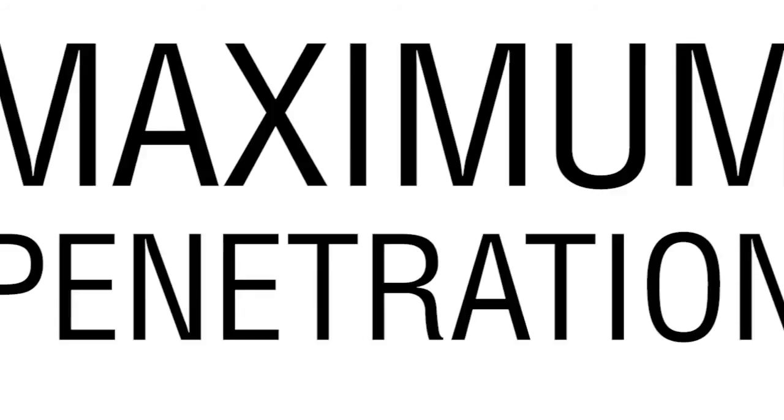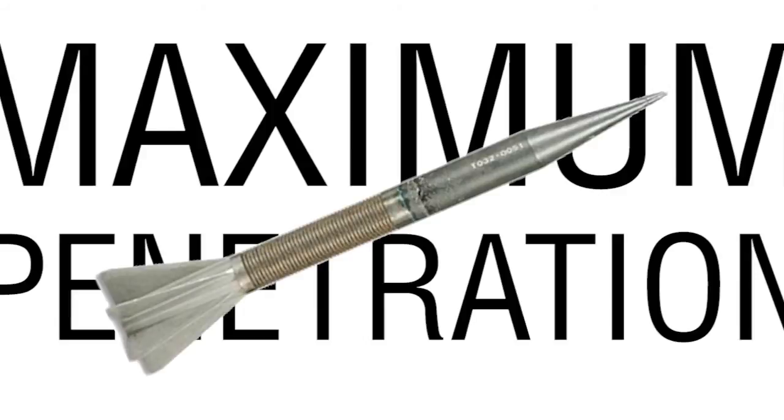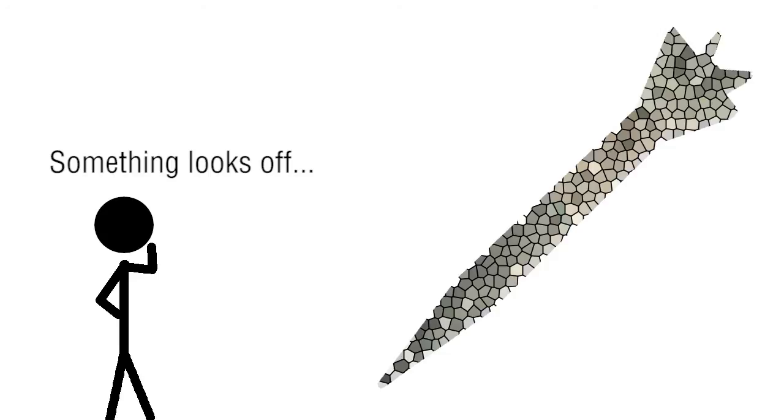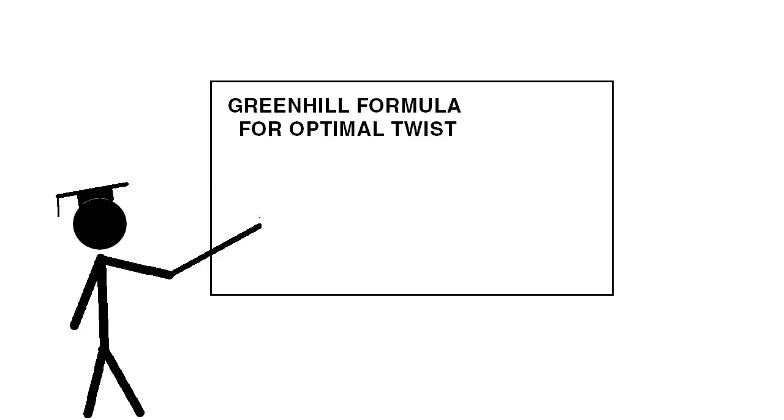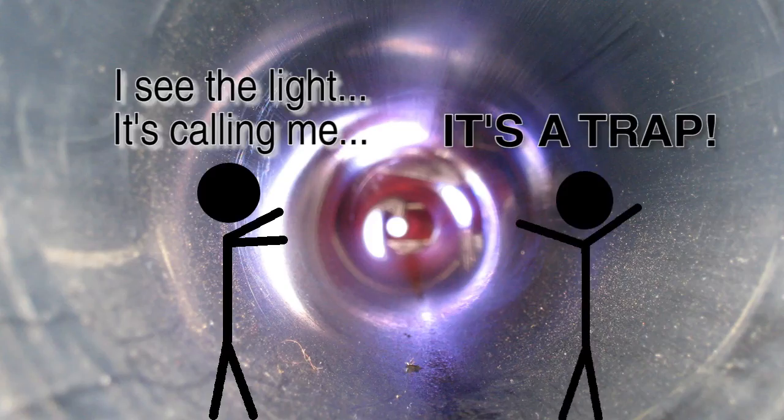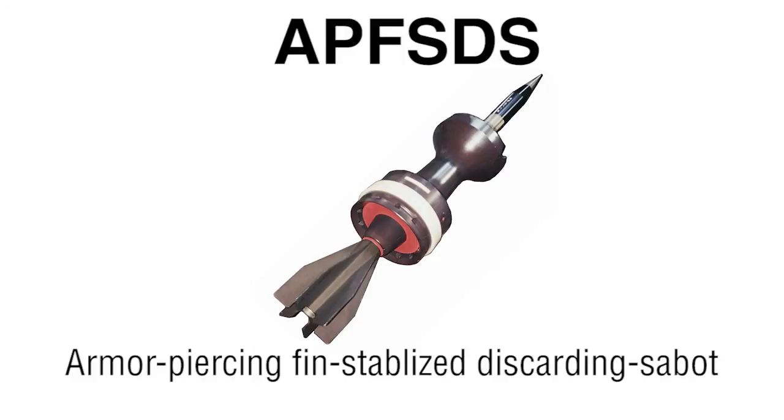To achieve maximum penetration, a very long and thin kinetic penetrator projectile is required. But to effectively stabilize this ammunition would require unrealistic amounts of rotational speed, as the amount of rotational speed required for stabilization is proportional to the projectile's length versus its diameter. Thus, tank cannons are kept as smoothbores and use fins to stabilize their ammunition.